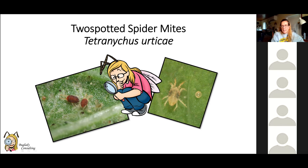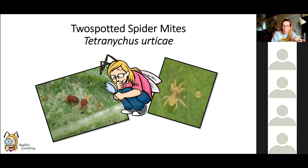Two-spotted spider mite is one species, but there are others like Tetranychus tumidus and Tetranychus gloveri. In Florida on tropical foliage — cannas, dieffenbachia — we were releasing Phytoseiulus persimilis for two-spotted spider mite and it worked well. But then we saw red mites and persimilis wasn't eating them. Sending them to Florida DPI for ID revealed they were Tetranychus tumidus, not two-spotted spider mites — and persimilis will not feed on them.